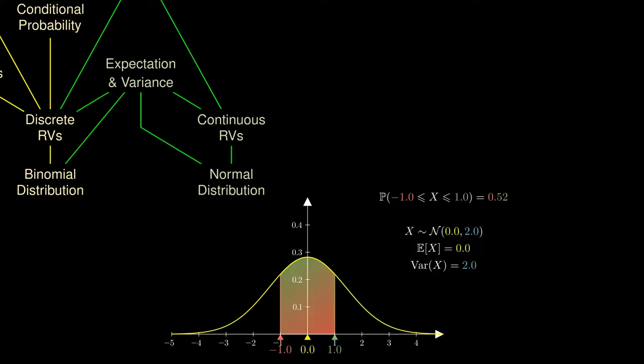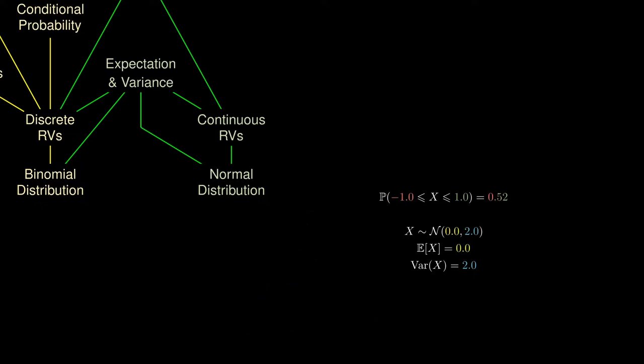The normal distributions satisfy a really important property. If we have two independent normal distributions, we can calculate their expectation using expectation properties, as well as their variance using variance properties. What's even more fascinating is that the linear combination of these normal distributions must also follow a normal distribution, whose expectation and variance are what we calculated previously.